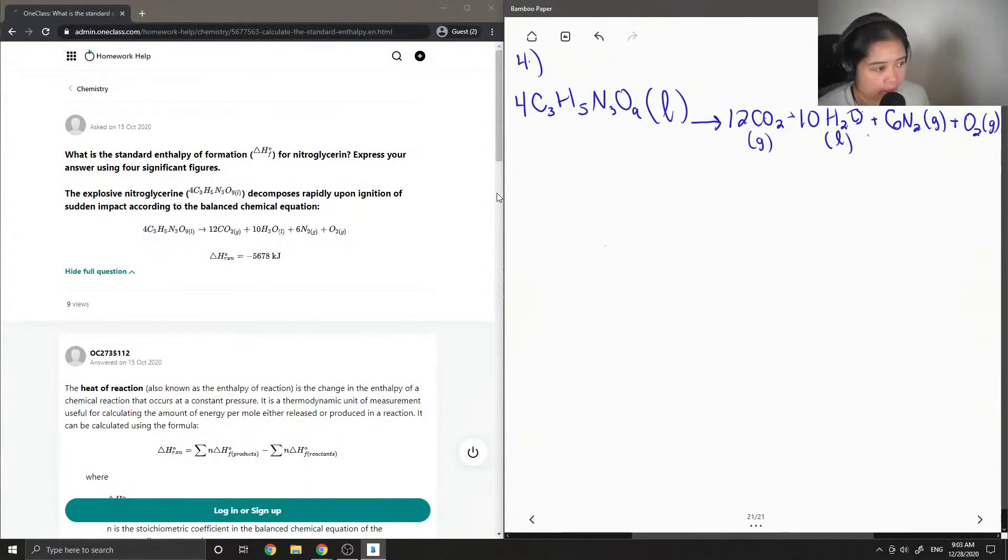Okay, so luckily for us, the reaction is balanced already, and the question also gives us the enthalpy of reaction. So this whole reaction is negative 5,678 kilojoules, and they want us to find the standard enthalpy of formation for nitroglycerin.